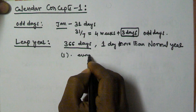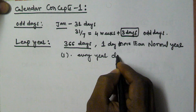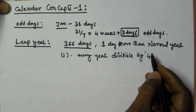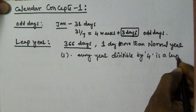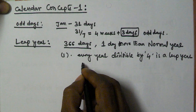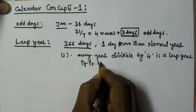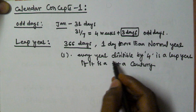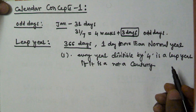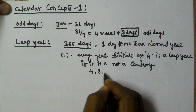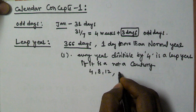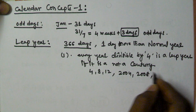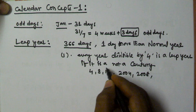Every year divisible by 4 is a leap year, if it is not a century. For example, 4, 8, 12, 2004, 2008 — these all are leap years, because these years are divisible by 4 and they are not a century.